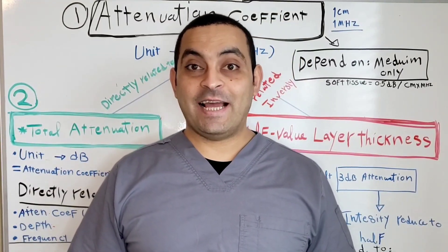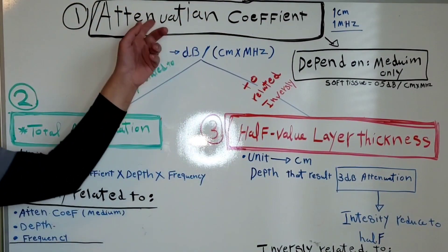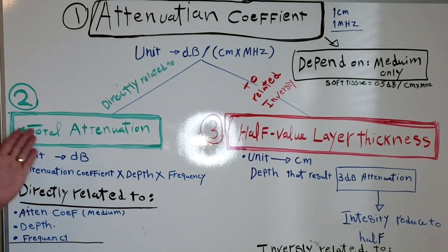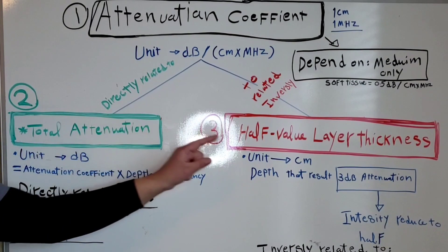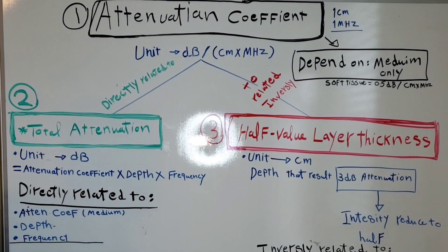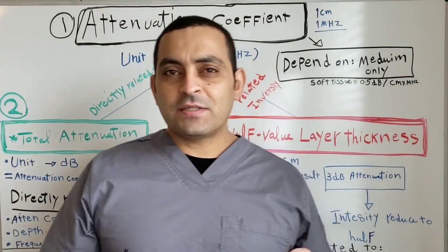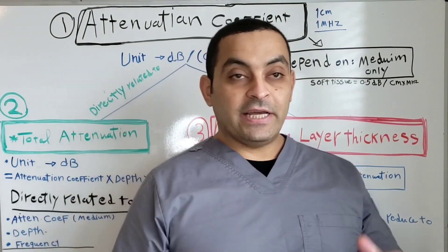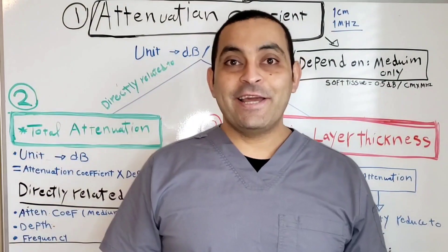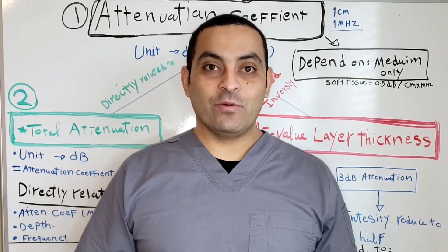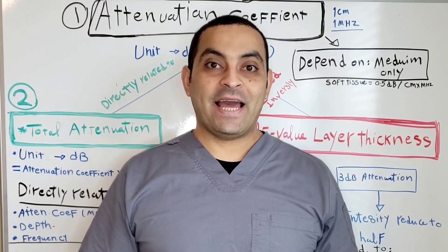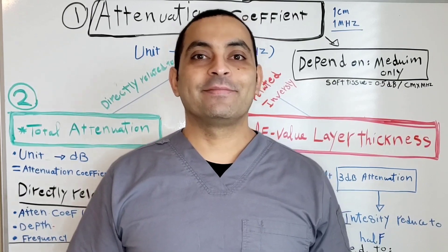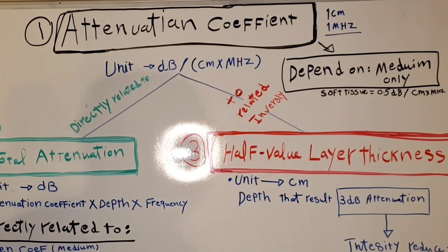In this lecture you will understand the difference between attenuation coefficient, total attenuation, and half value layer thickness, and how they are related to each other, and how to answer any tricky question in the SPI exam related to this topic. My name is Joe and I help people understand ultrasound physics and pass the SPI exam.